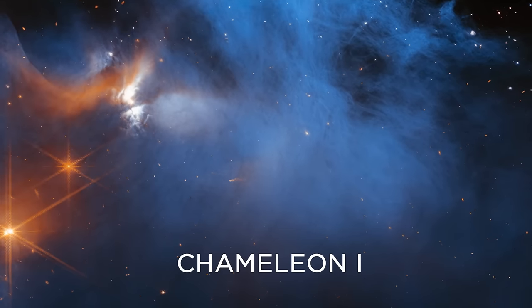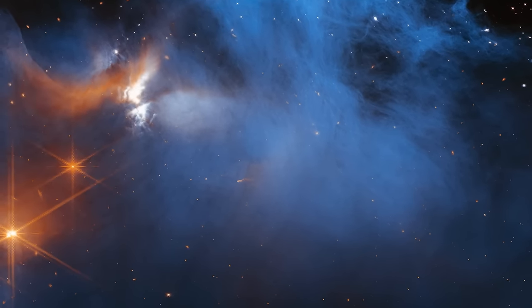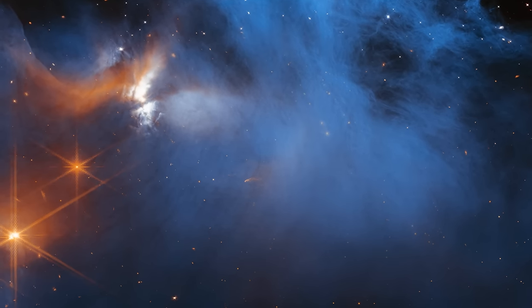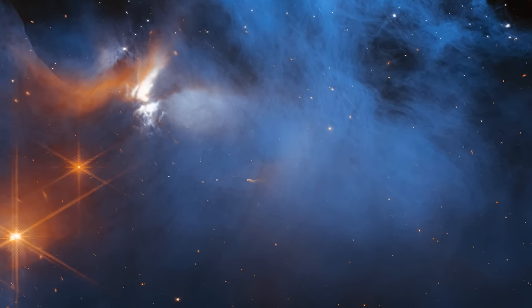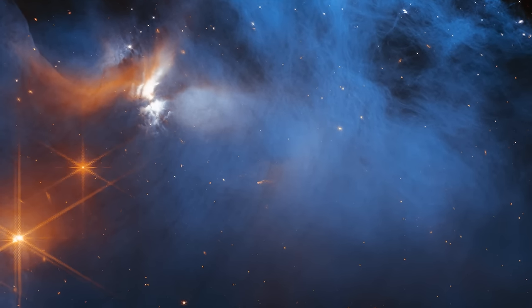Chameleon 1 is a molecular cloud that is about 630 light-years from Earth. The telescope has detected types of ice grains here, which were not previously observed, at temperatures down to about minus 260 degrees Celsius.